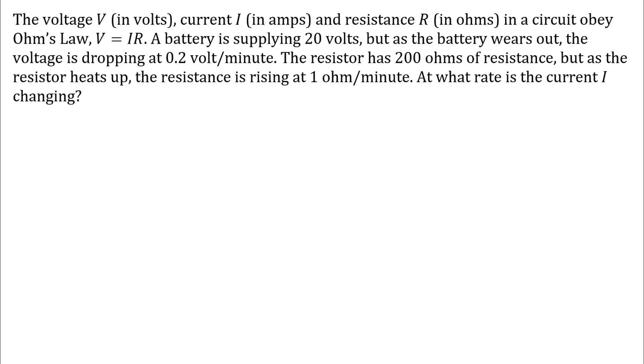We've got some information about the voltage, so I'm going to go ahead and write those things down here. We've got V equals 20 volts, and as a battery wears out, the voltage is dropping at 0.2 volts per minute, so that's a rate of change. Because that's dropping, we have a negative rate of change here, negative 0.2.